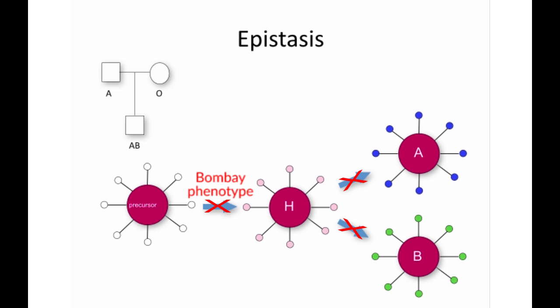In this case, therefore, the enzyme that would act to produce H substance acts in an epistatic manner to produce a phenotype similar to deficiency of the A or B enzyme.